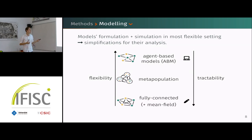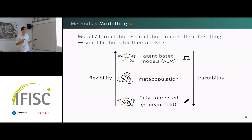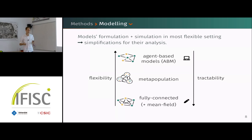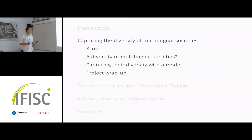In simple settings, there is also a middle ground: a meta-population framework. In this approach, to model interactions between people, you put them in cells and they can move from one to another to interact with different populations, and when you make some simplifications you can also get some analytical results. That's it for the very general methodology.